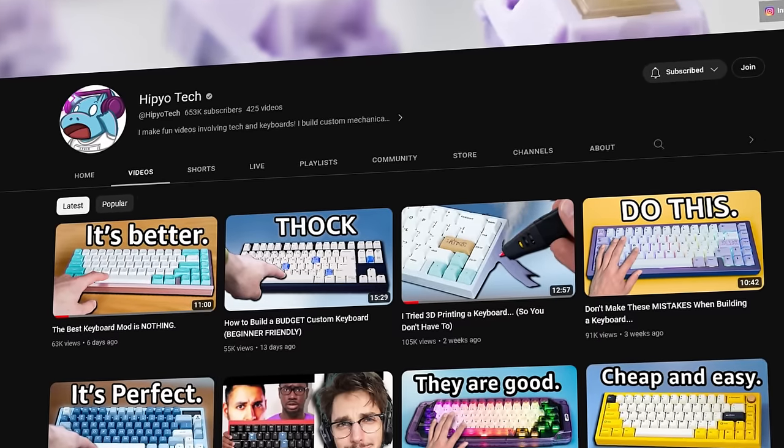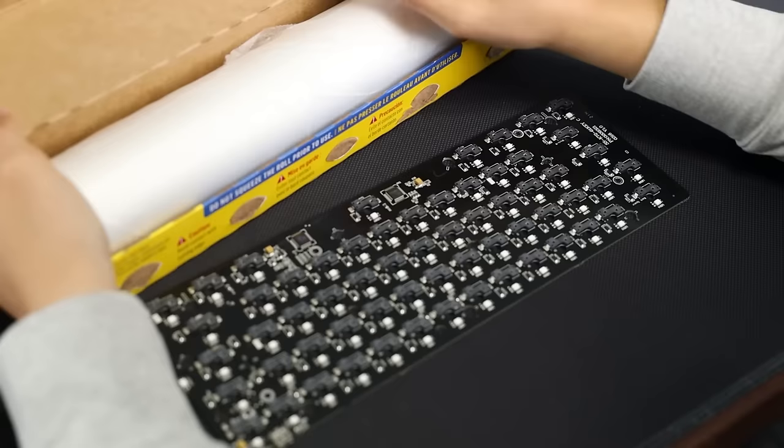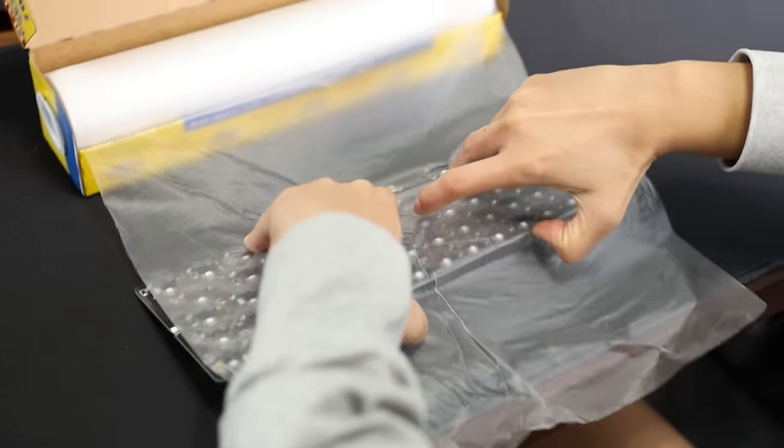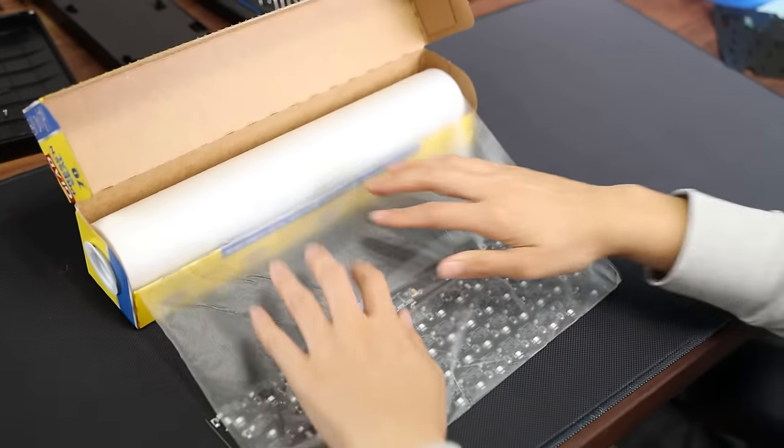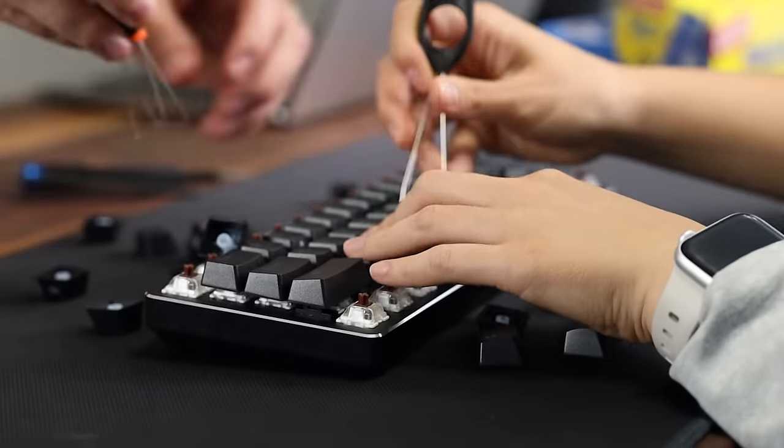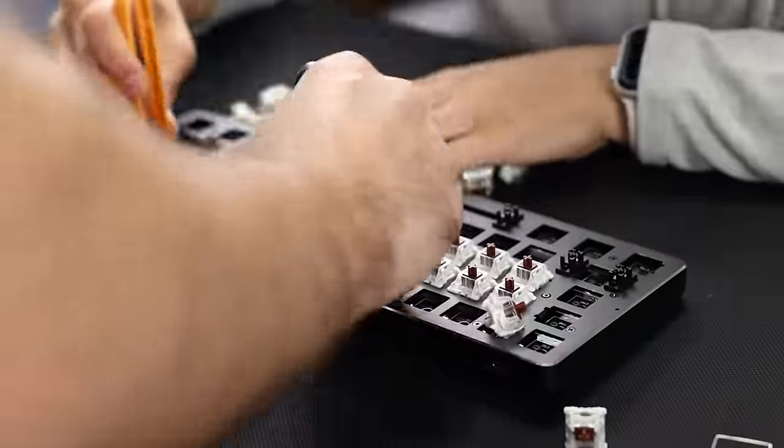For the next mod, we're trying a mod I learned from Hippiotech. He calls it the press and seal mod. You basically wrap your PCB in press and seal, the stuff you find in your kitchen to wrap your leftover food. Hippiotech definitely knows his stuff, but I don't know about this one. I suppose wrapping tape around the PCB can alter the sound profile of a keyboard, or it might just break it. But let's find out together.